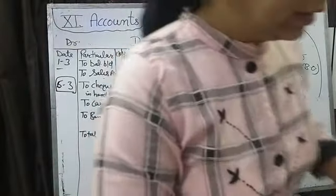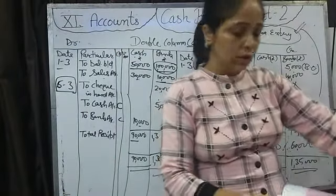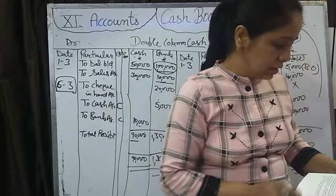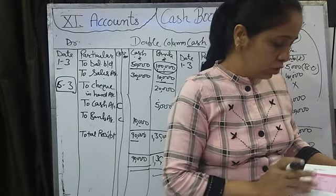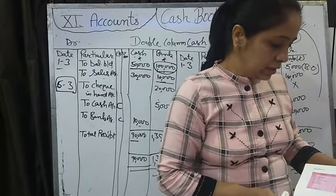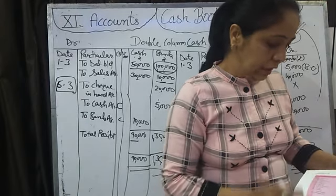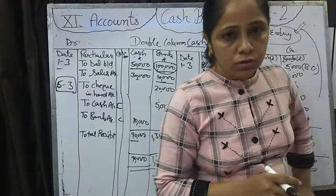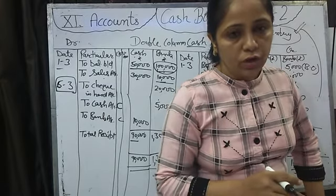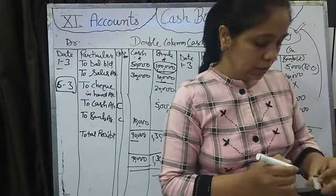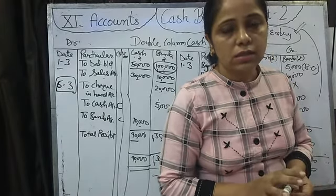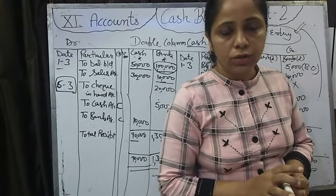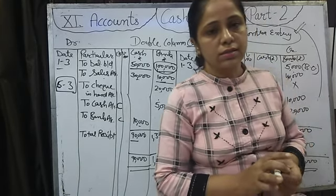Today I have explained how to make the double column cash book. Your homework: complete illustrations 7 and 8 of double column cash book, and complete illustrations 1 to 6 of single column cash book. Thank you. Have a nice day.